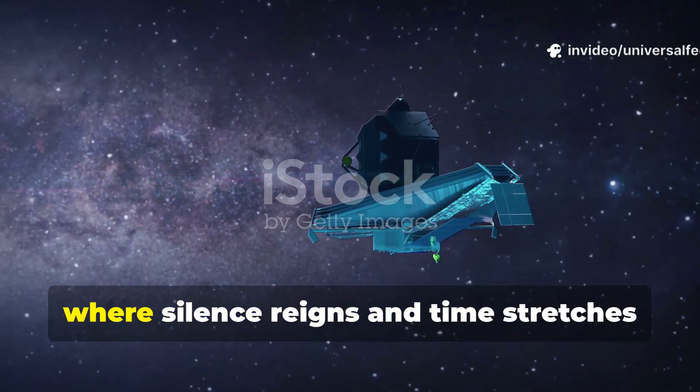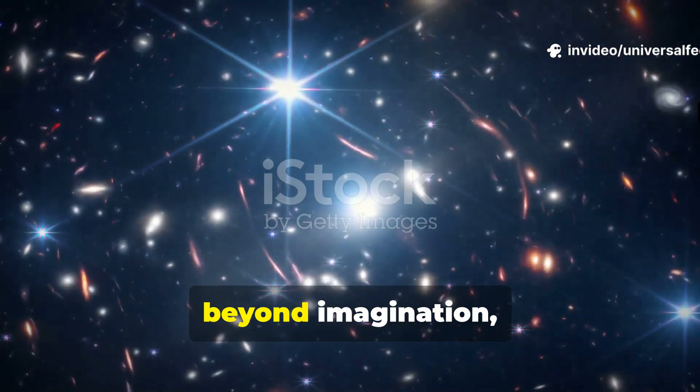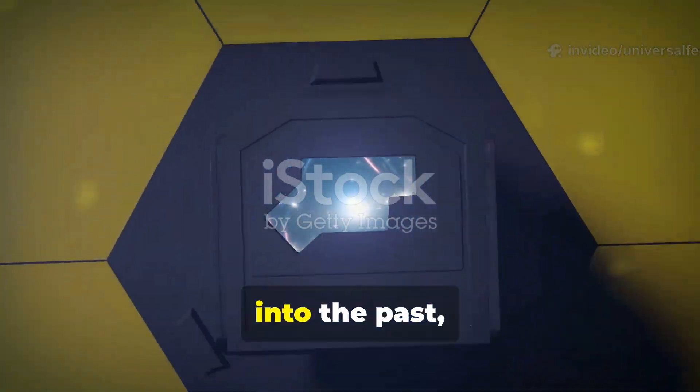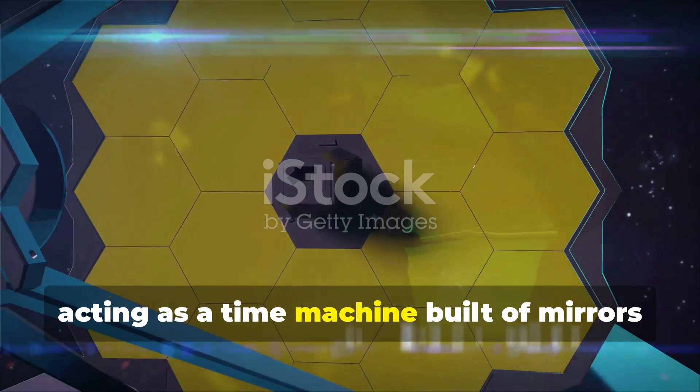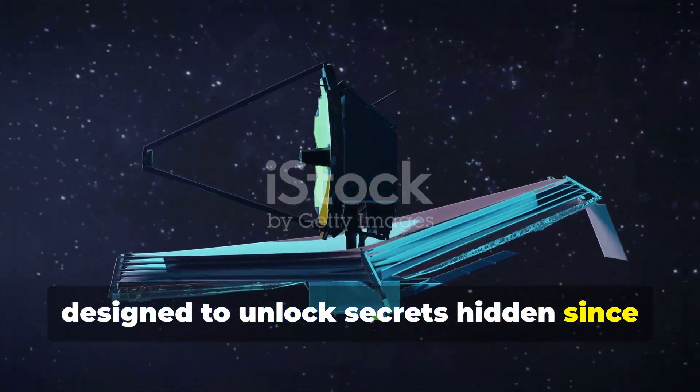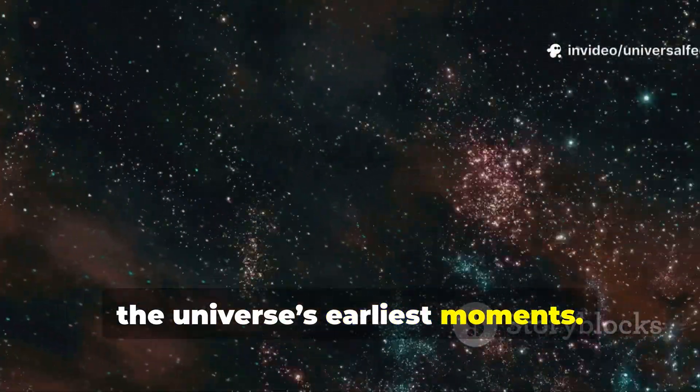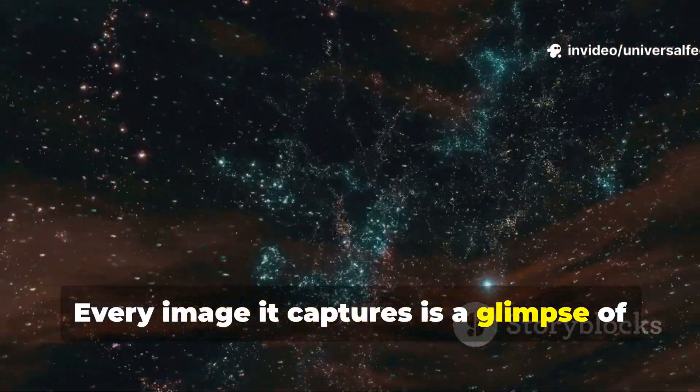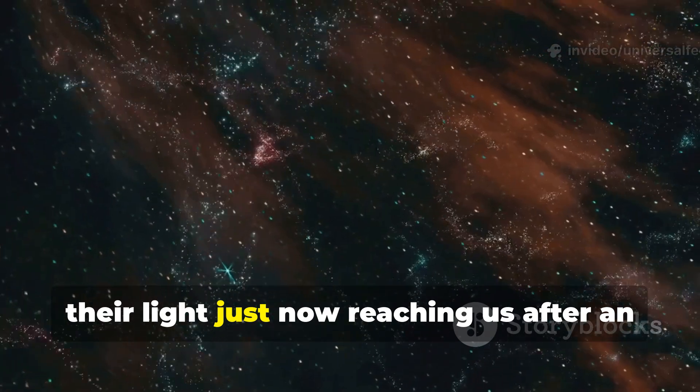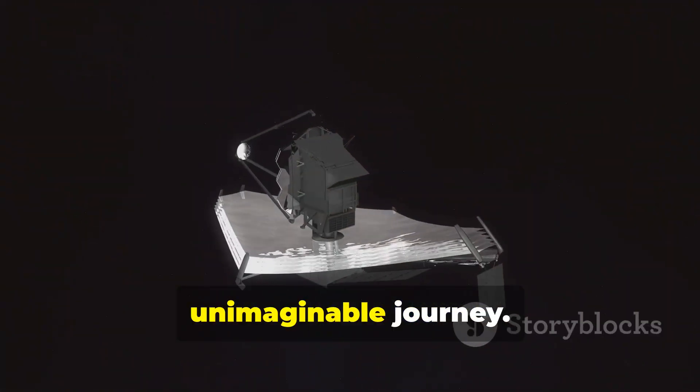In the cold expanse of space, where silence reigns and time stretches beyond imagination, the James Webb Space Telescope peers deep into the past, acting as a time machine built of mirrors and light, designed to unlock secrets hidden since the universe's earliest moments. Every image it captures is a glimpse of galaxies as they were billions of years ago, their light just now reaching us after an unimaginable journey.